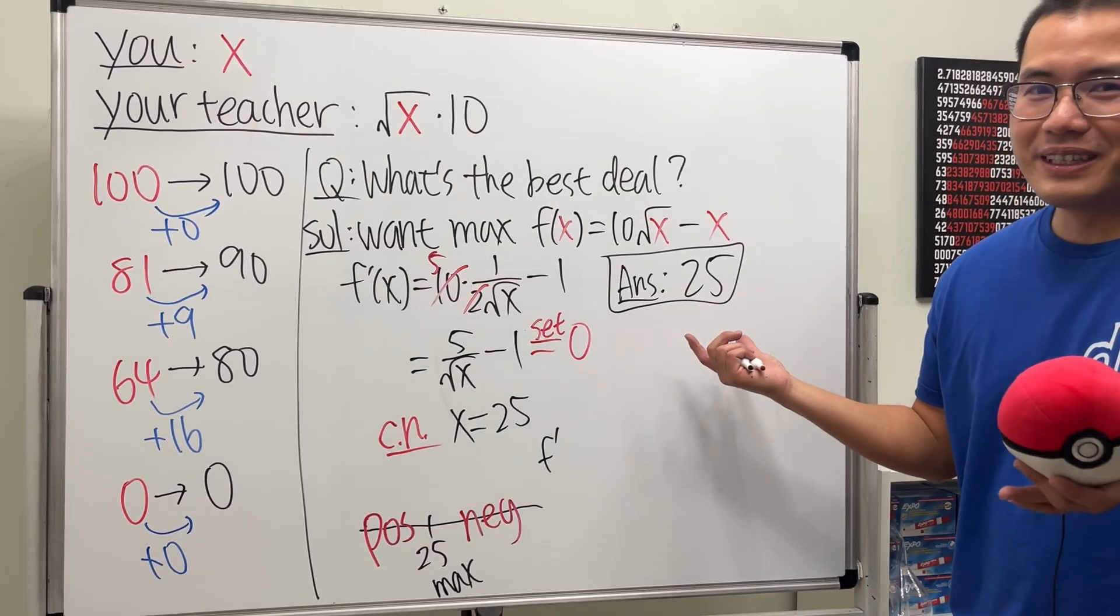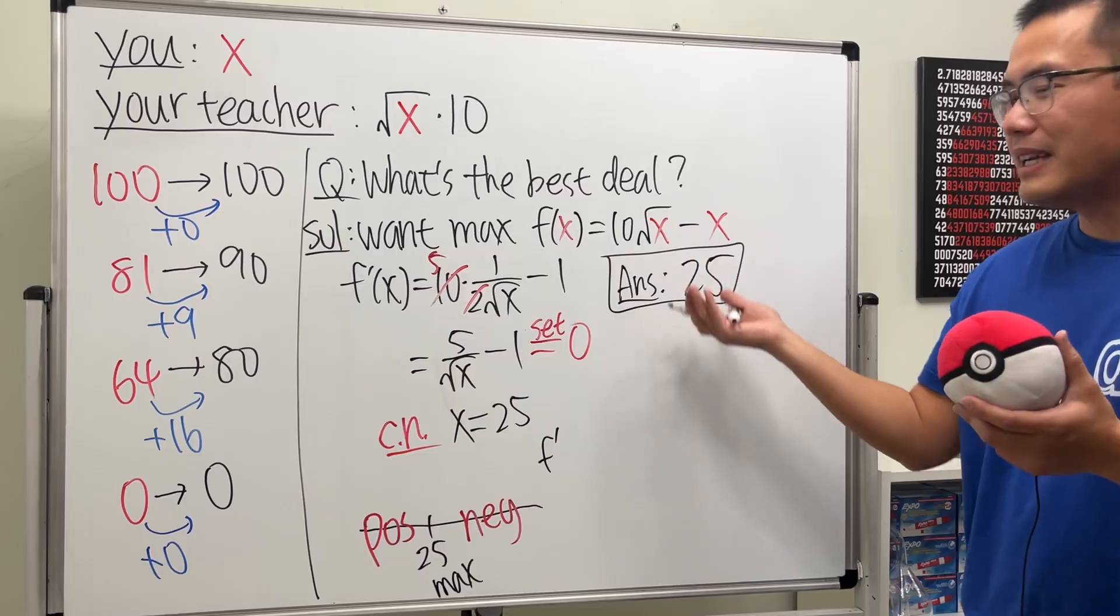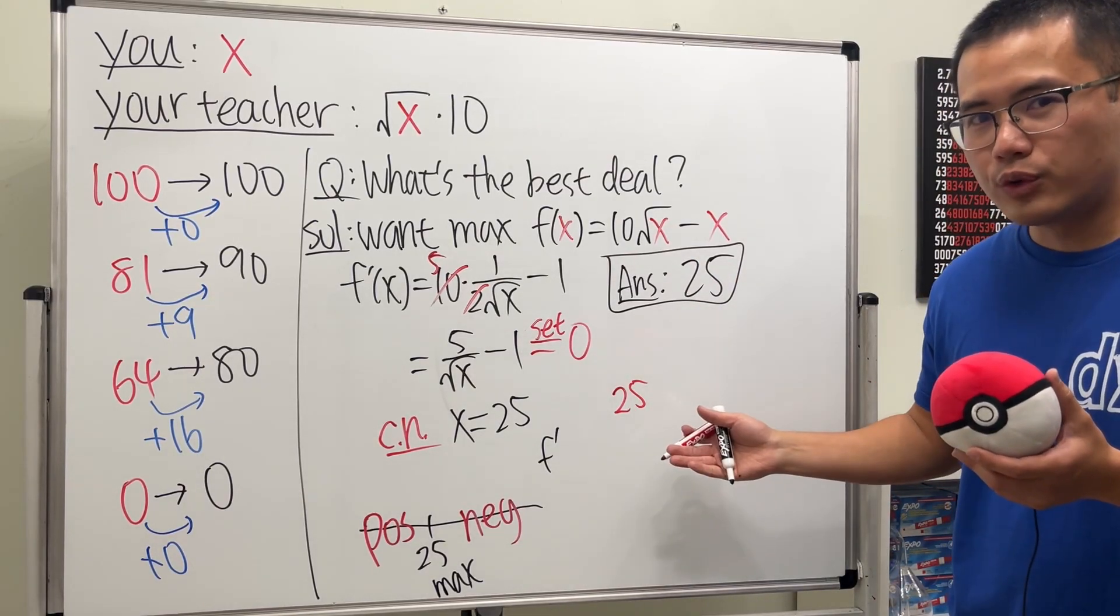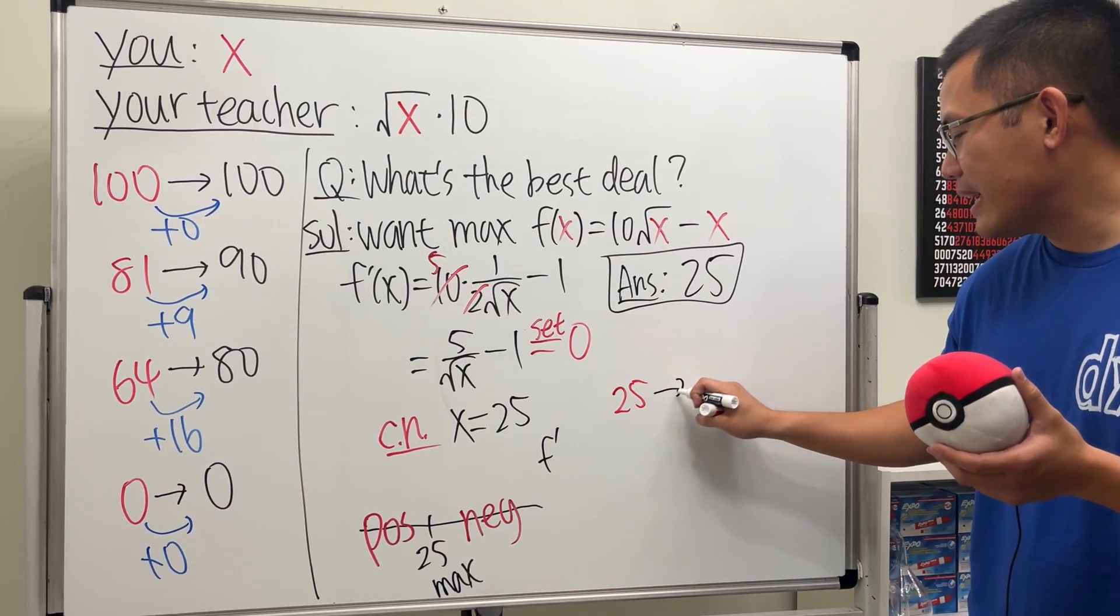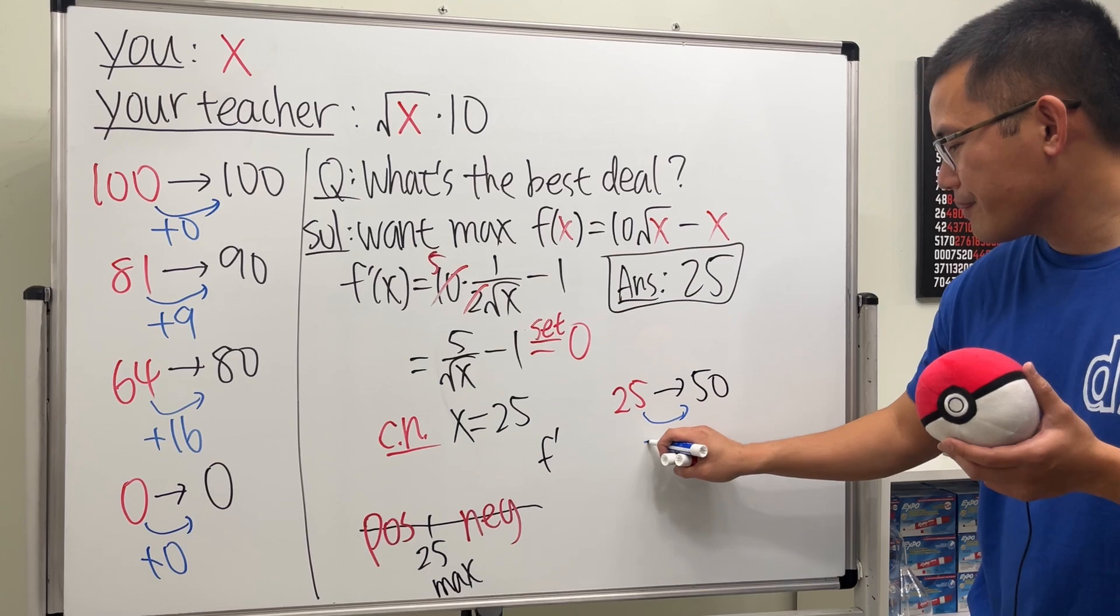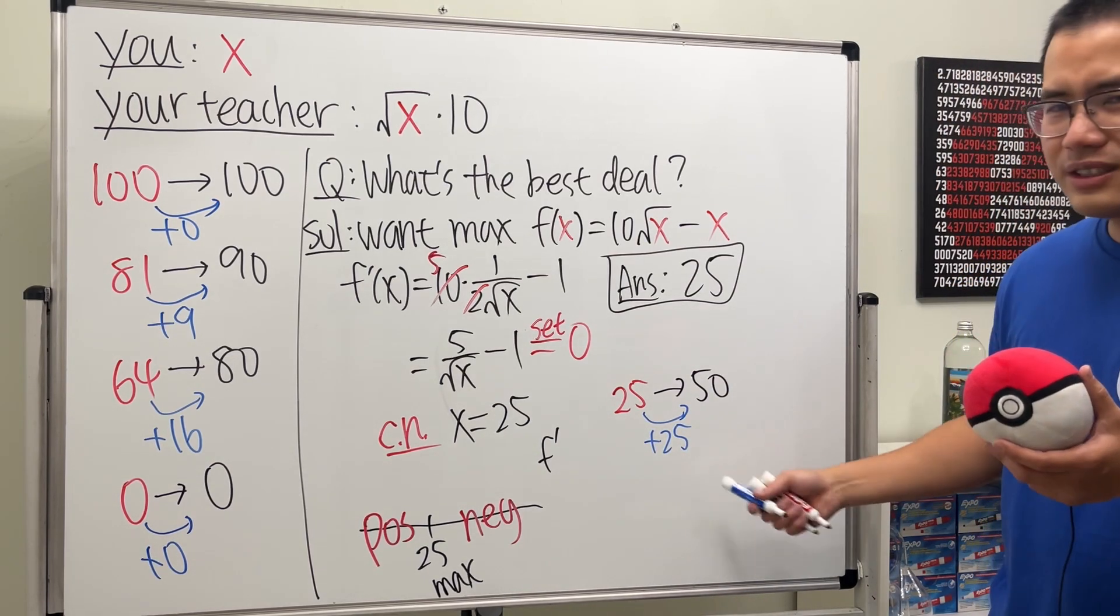But let's just confirm that it is actually going to give us the... It is actually the best deal, right? So let's see. If we have 25, take the square root, we get 5. And then multiply by 10, we get 50. And guess what? This right here, yeah, it's an additional 25 points, 25 free points. So that's so good, huh?